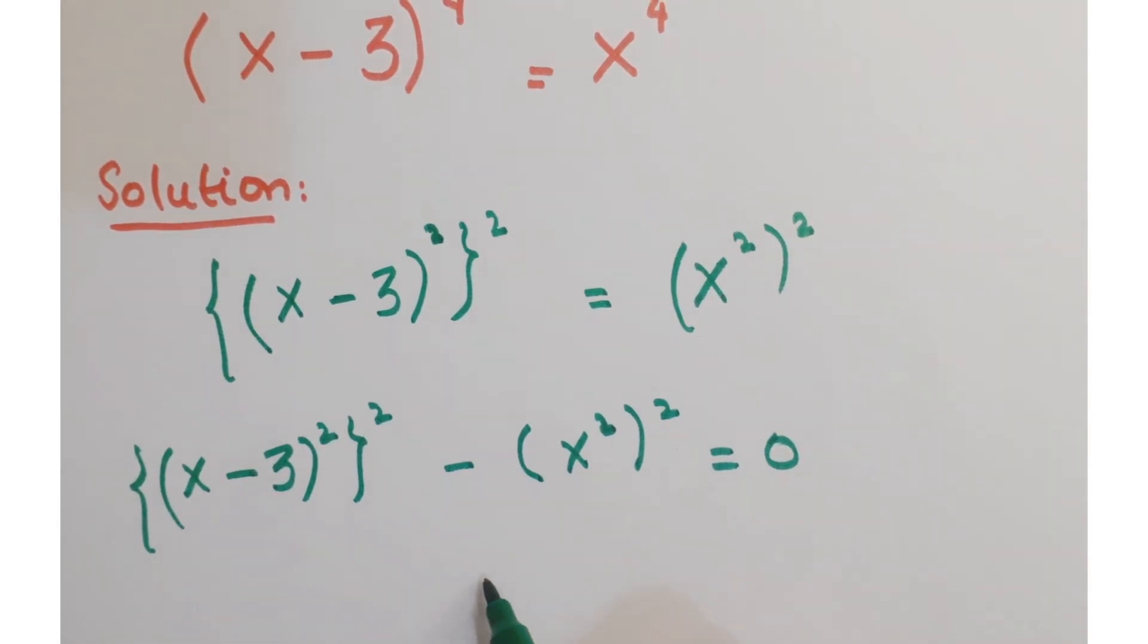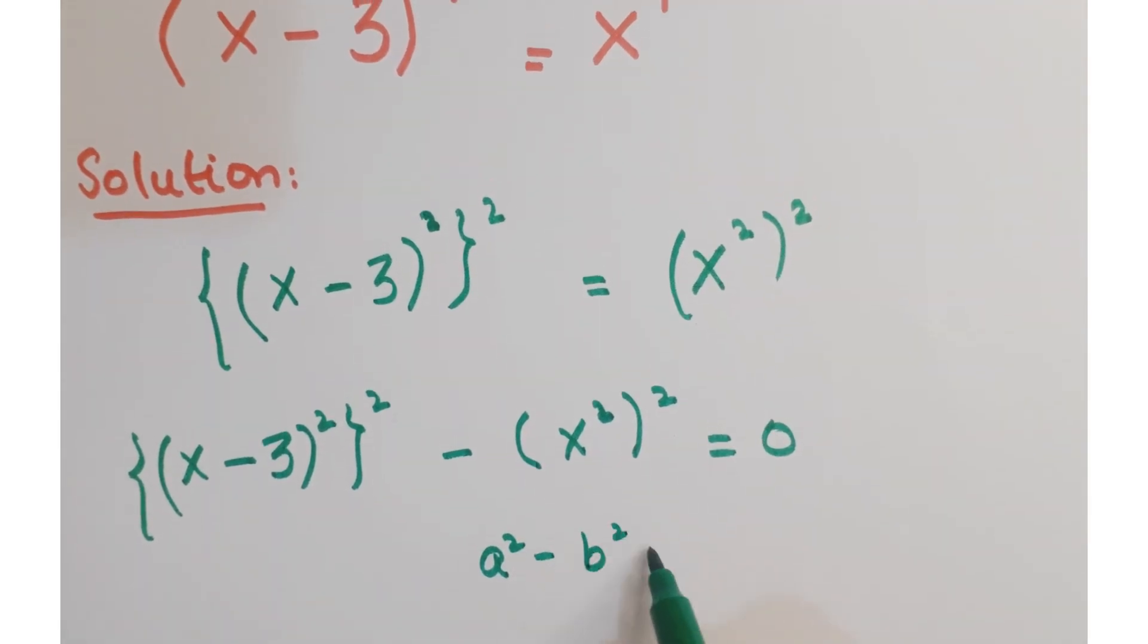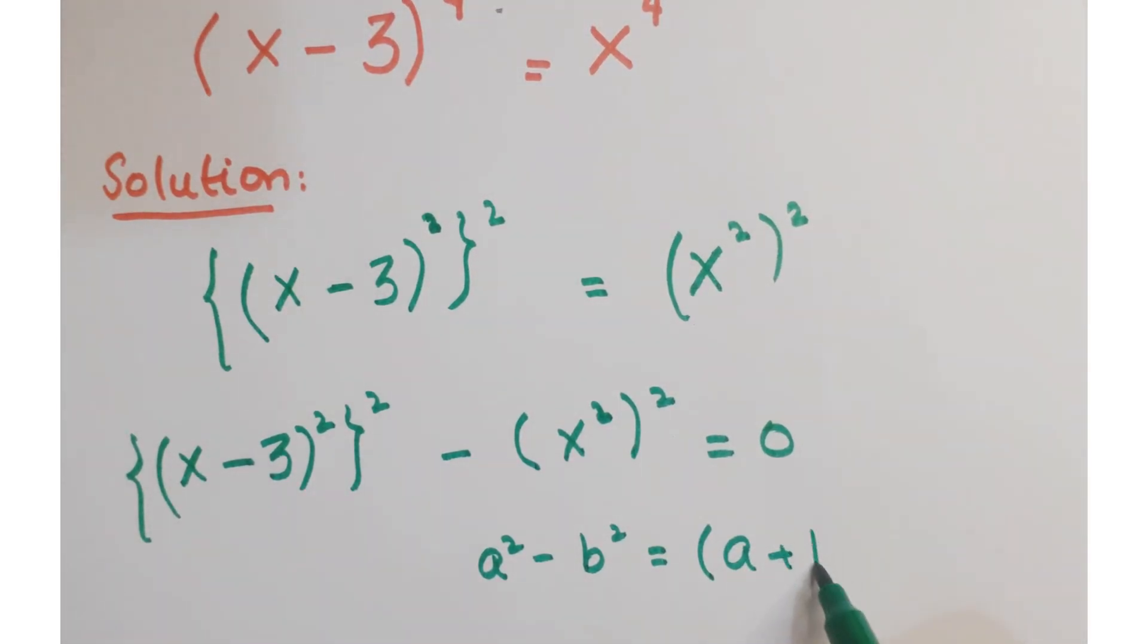Now you can apply here the algebraic identity that is a square minus b square is equal to a plus b into a minus b.